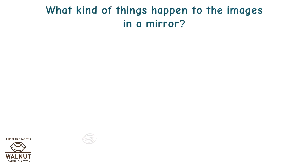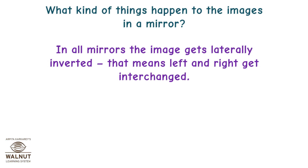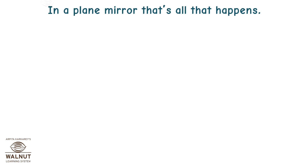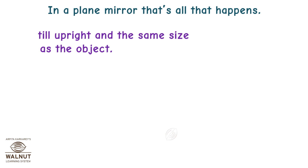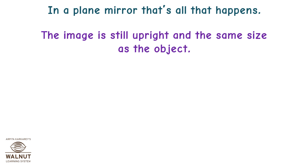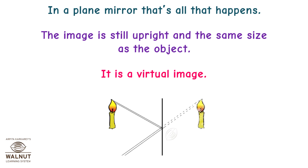What kind of things happen to images in a mirror? In all mirrors, the image gets laterally inverted — that means left and right get interchanged. In a plain mirror, that's all that happens. The image is still upright and the same size as the object. It is a virtual image.